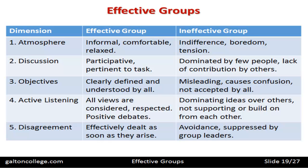When there's a disagreement, an effective group will deal with it as soon as it arises — they sit down, solve it, get it resolved, and move on. The ineffective group may avoid it, just not talk about it, or have it suppressed by the group leaders who don't want to think about it. That's not healthy — it'll come back in the end to cause a problem.